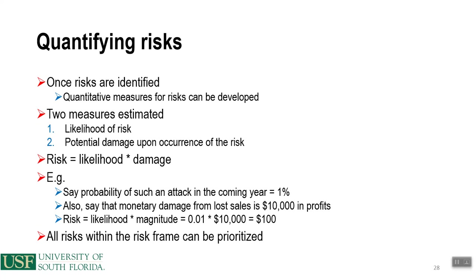Once risks are identified, quantitative measures can be developed. There are two measures estimated: likelihood of risk and potential damage upon occurrence of the risk. Risk equals likelihood times damage. For example, if the probability of an attack in the coming year is 1% and the monetary damage from lost sales is $10,000 in profits, the risk equals 0.01 times $10,000, which equals $100. All risks within the risk frame can be prioritized accordingly.